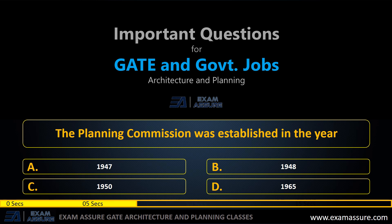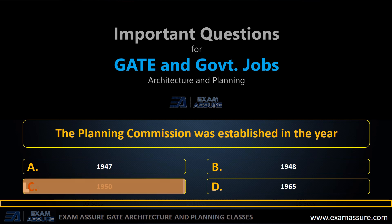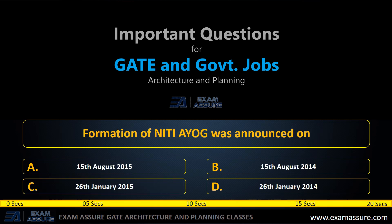Next question: The Planning Commission was established in the year — option A: 1947, option B: 1948, option C: 1950, option D: 1965. The correct answer is option C, 1950.